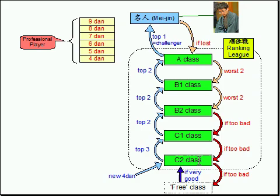The new 4th dan player first enters C2 class, which currently consists of 43 players. And only top 3 goes up to C1 class in the next year, which currently has 31 players. And top 2 of them goes to B2 in the next year with 24 players. And top 2 goes to B1, which always has 13 players. And top 2 goes to A class, which always has 10 players. And best of which becomes the challenger for Meijin. The loser of the title match will be in A class in the next year.